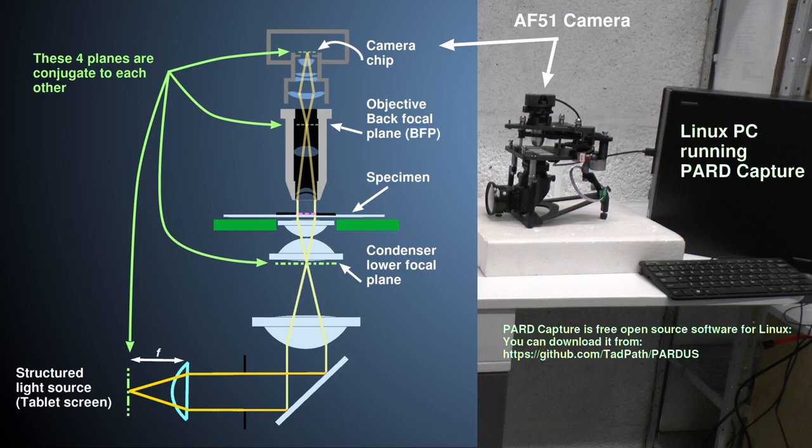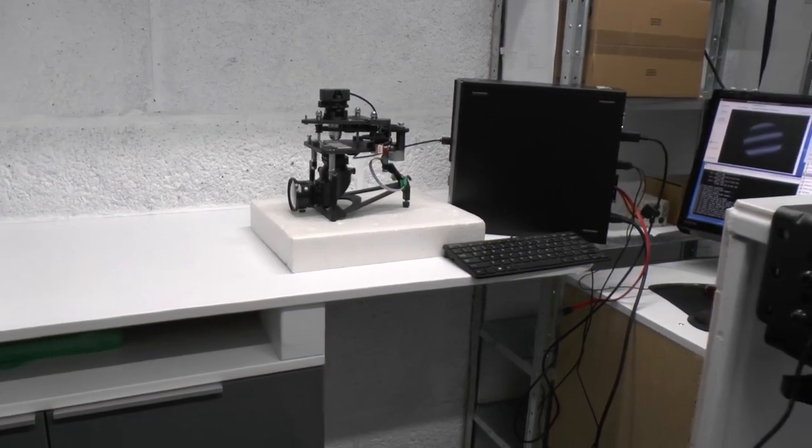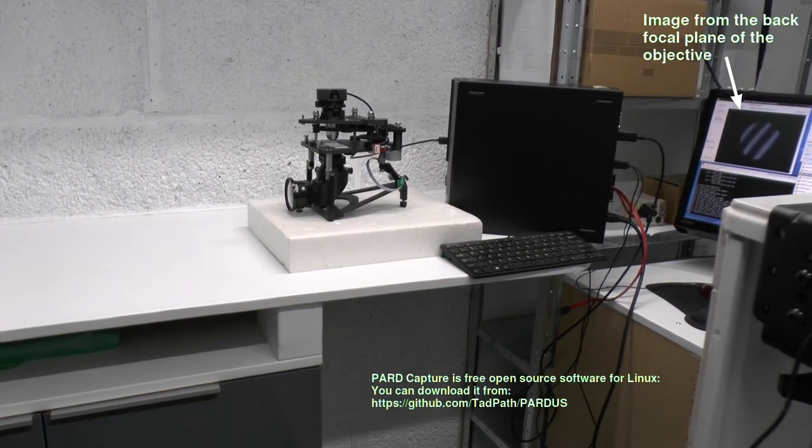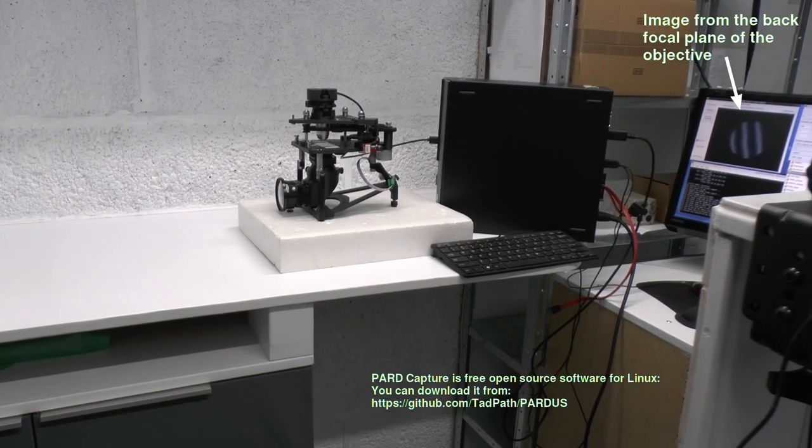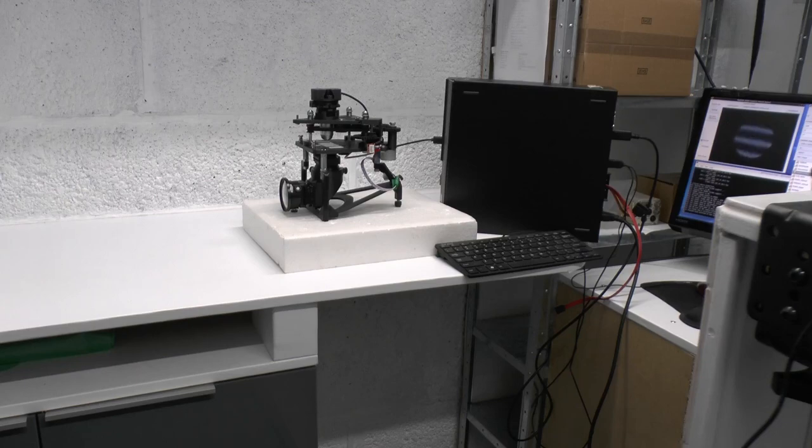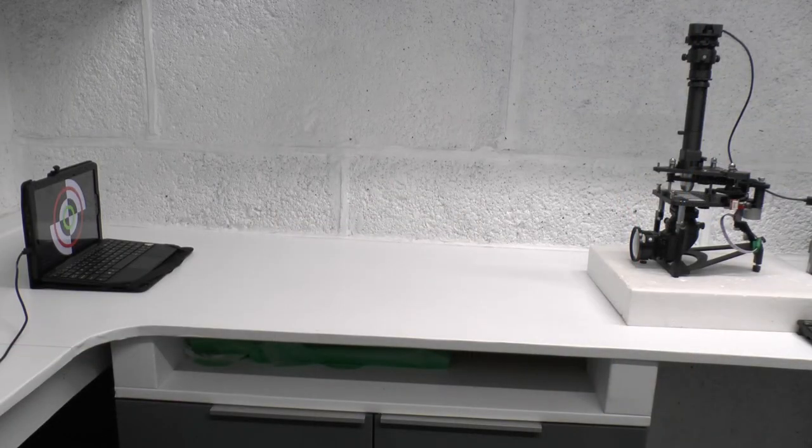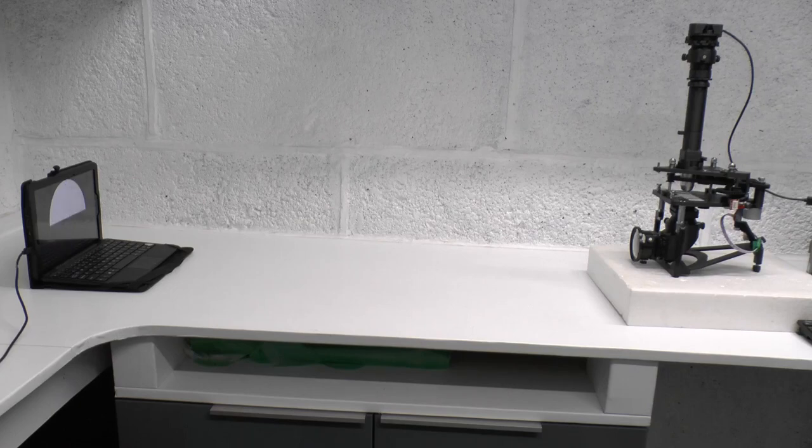The camera is connected to this PC which is recording the image and you can see how the image in the back focal plane of the objective effectively mirrors that of the input structured light aperture. We also want to see what the image of the specimen looks like with these apertures so for a separate run of the experiment I set up the camera on top of an eyepiece with the full optical tube in place. During the actual experiments I turn out the room lights to avoid unnecessary light contamination from the environment.